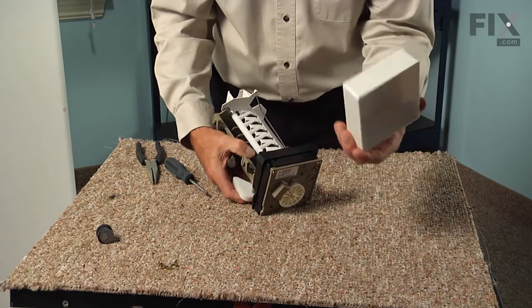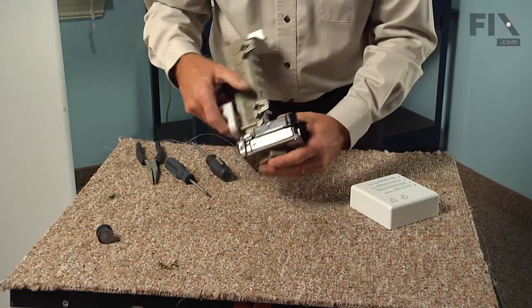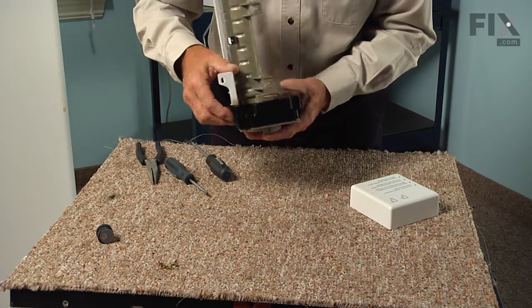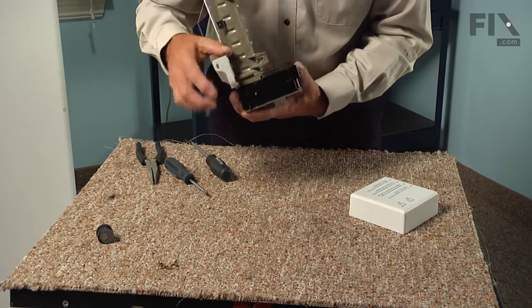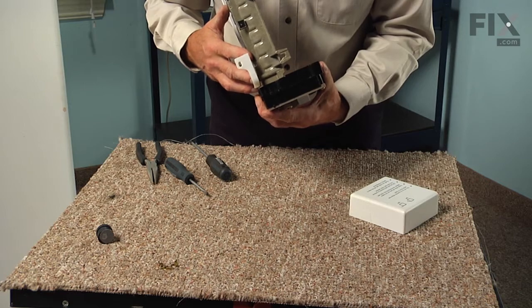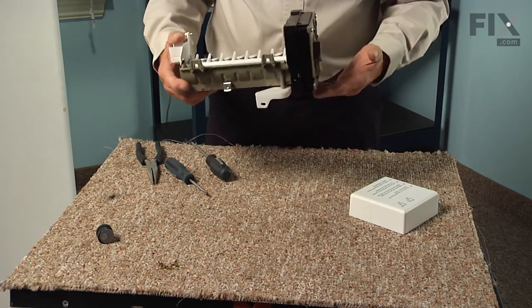Now if you choose, you can put the cover back on or if your model has the harness that connects directly to the ice maker head itself, you can leave that cover off until the very end just so that we can make sure that the locking tab engages. We're now ready to put the ice maker back in the refrigerator.